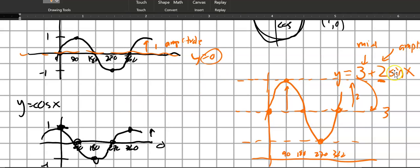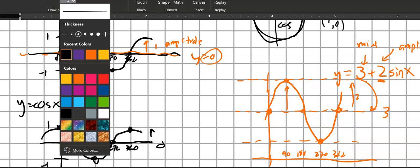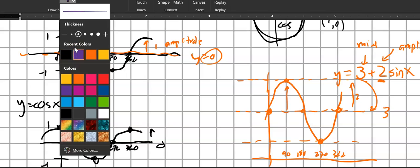Now if this had been a negative 2 sine, let's say, that this was like 3 minus 2 sine x, everything would be the same. But since that's negated, it gets flipped across the midline. It still starts at the middle, but it would go down instead of up. So it would look like that.